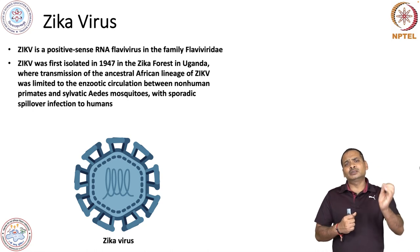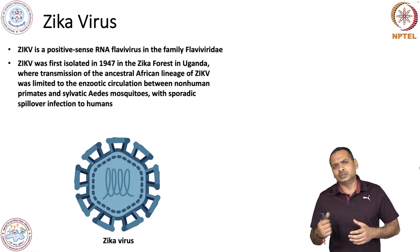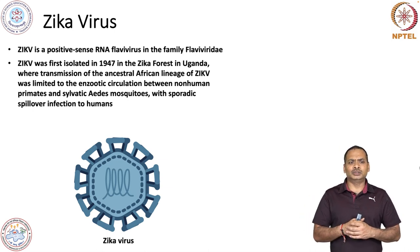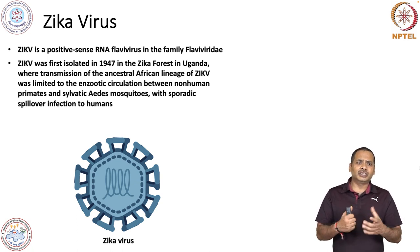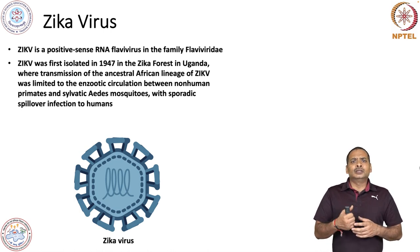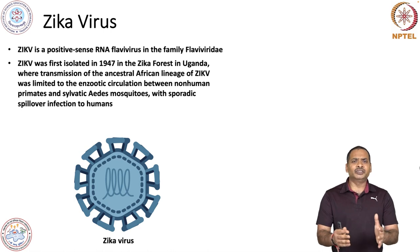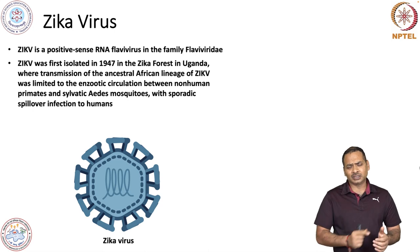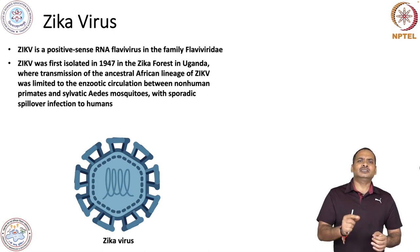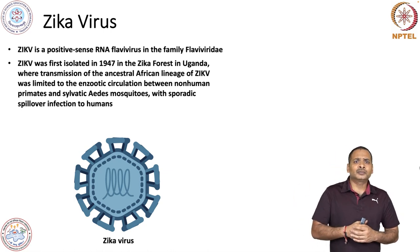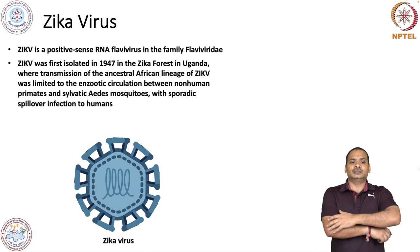Sometimes the mosquito bites humans, and then the virus enters the human host. Therefore, we can say that there is a spillover infection to humans. There is clear evidence that the virus is present in the enzootic cycle and sometimes jumps to humans when a mosquito bites a human. For dengue, this enzootic cycle was not so clearly established.